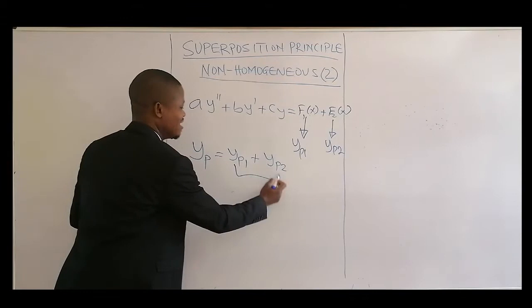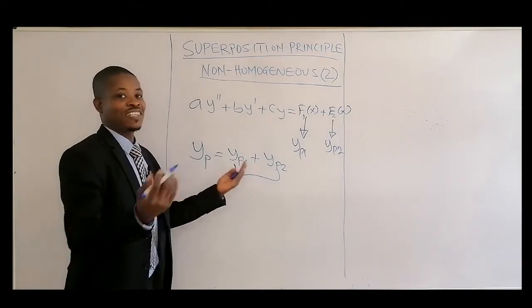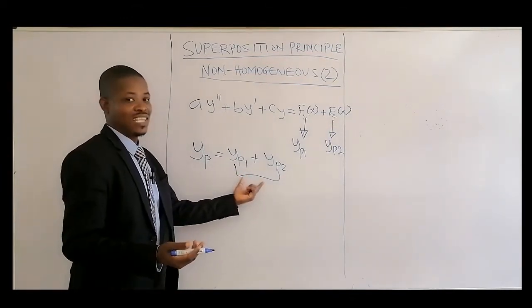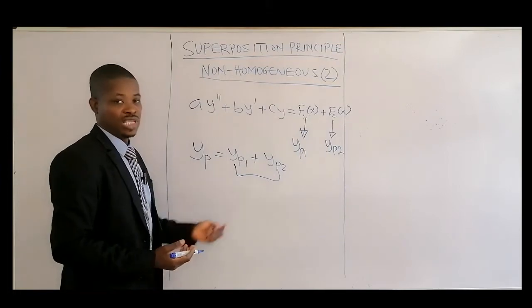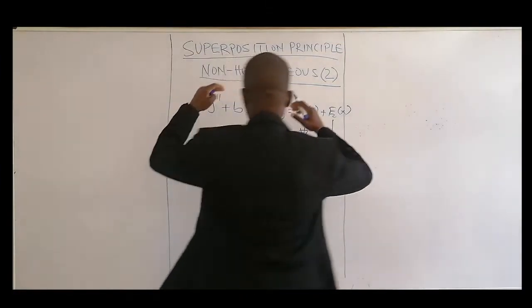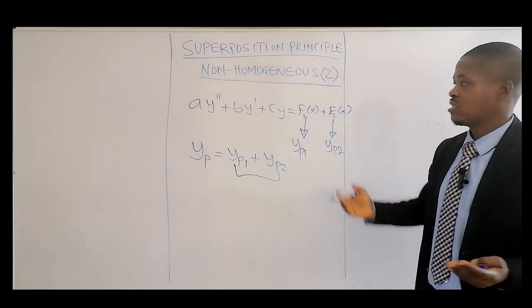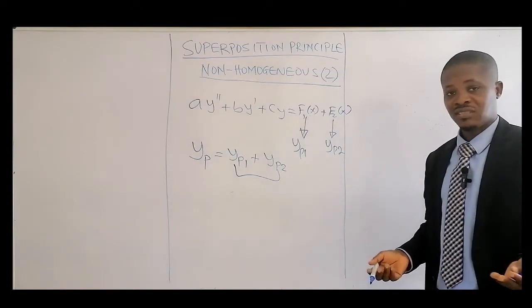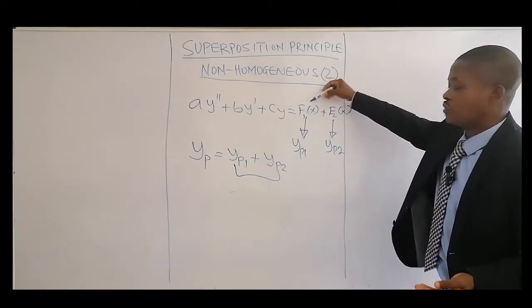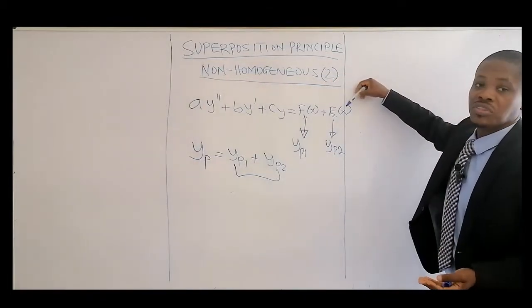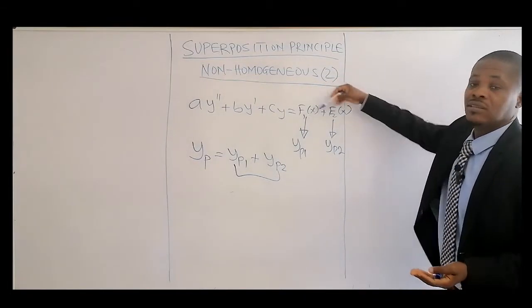So superposition is just adding the several effects together. Adding the particular solution together. And in this case we are still going to use the undetermined coefficients. f2 is also a function of x. So you're having one function combined with another function, they superimpose together.